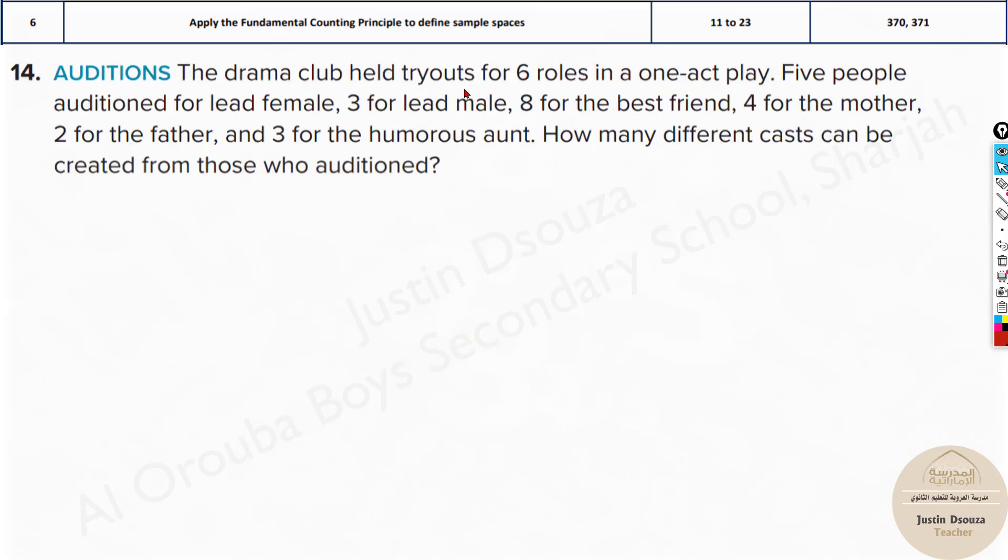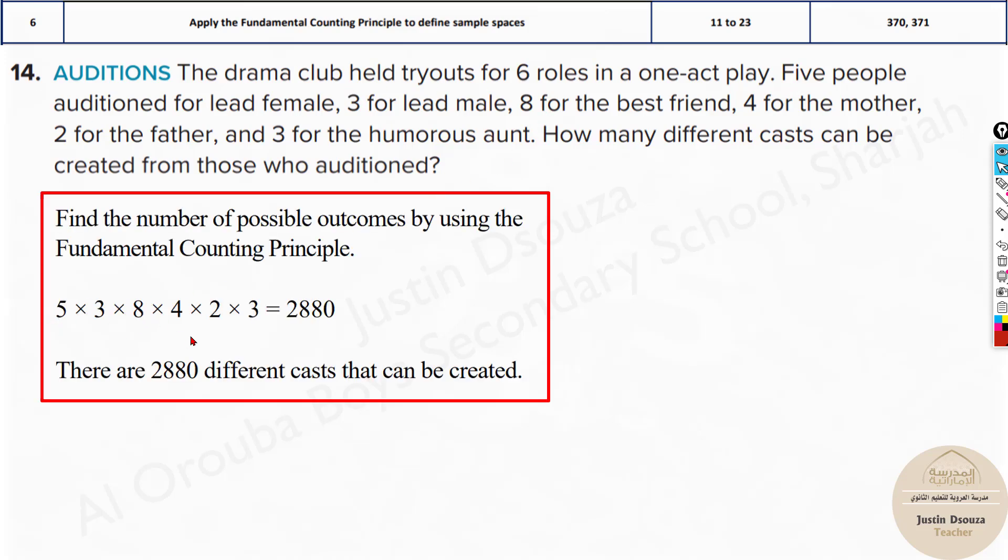The drama club has tryouts for six roles in a one-act play. Five people audition for the lead female, three for the lead male, eight for the best friend, four for the mother, two for the father and three for the humorous hand. How many different casts can be created from those auditions? Now don't multiply the six roles. Just multiply the number of people. You need to multiply five, three, eight, four, two and three.